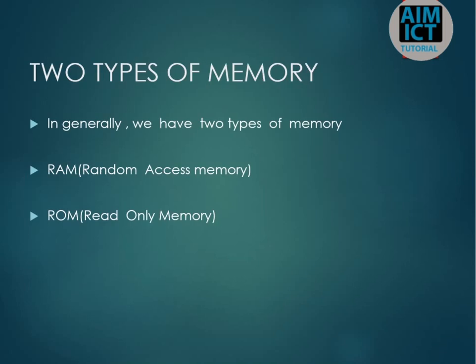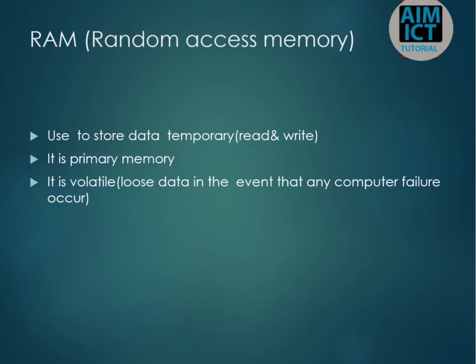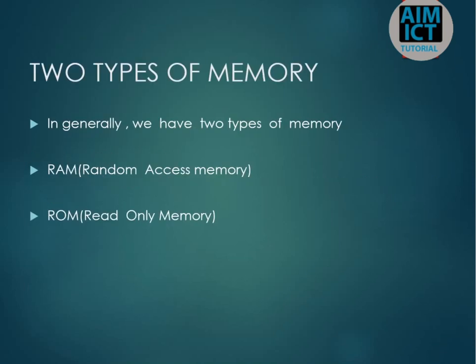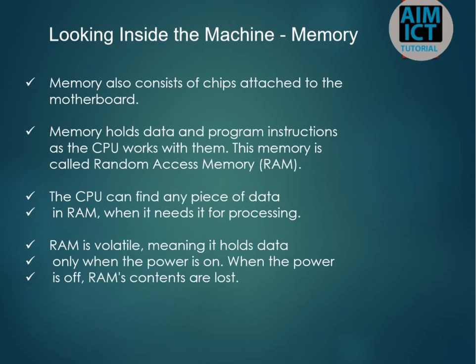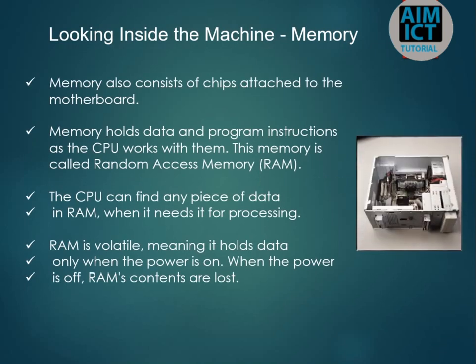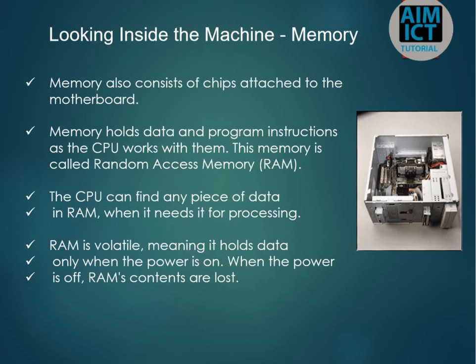We discussed memory, and there are two types of memory. There is permanent memory and temporary memory. RAM, which stands for Random Access Memory, is temporary memory. It is used to store data temporarily, and supports read and write operations. It is primary memory and it is volatile — it can lose data in the event of any computer failure.